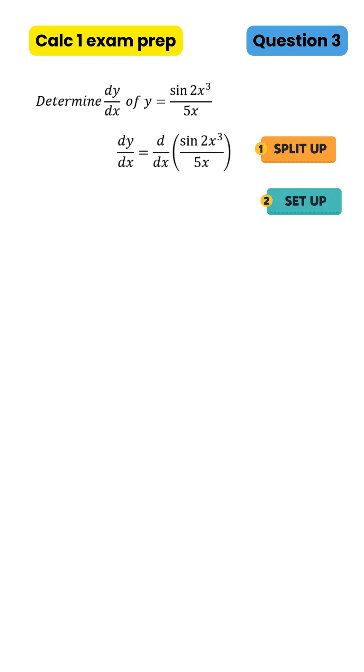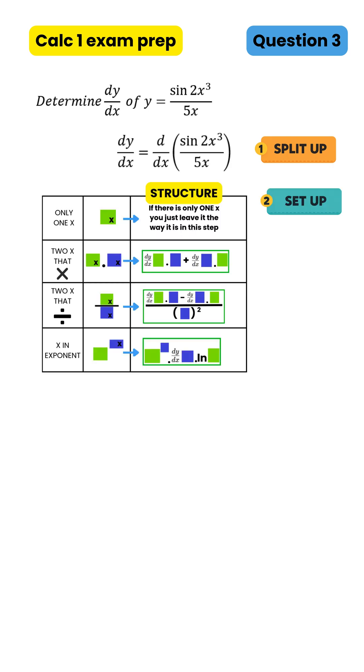Step 2. Set up. Use the table to build the structure. Remember, we're not differentiating yet. We're just setting up the structure for differentiation. We can see we have two parts with an x and a division, so we use the quotient structure.